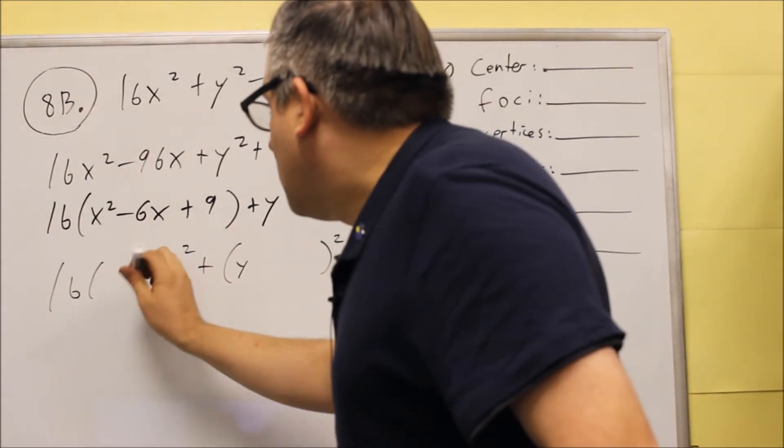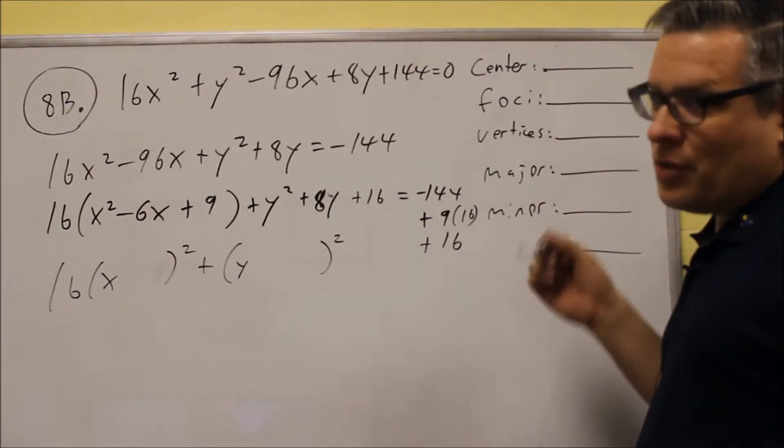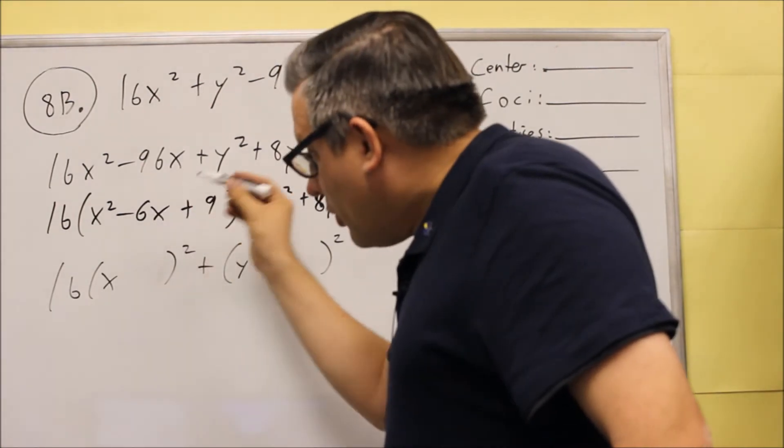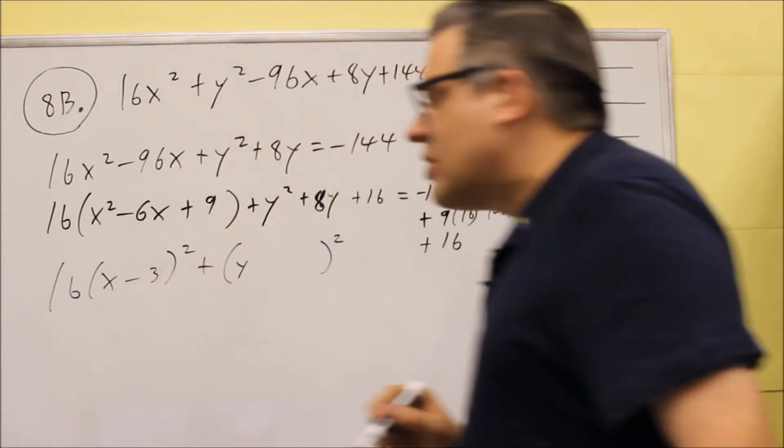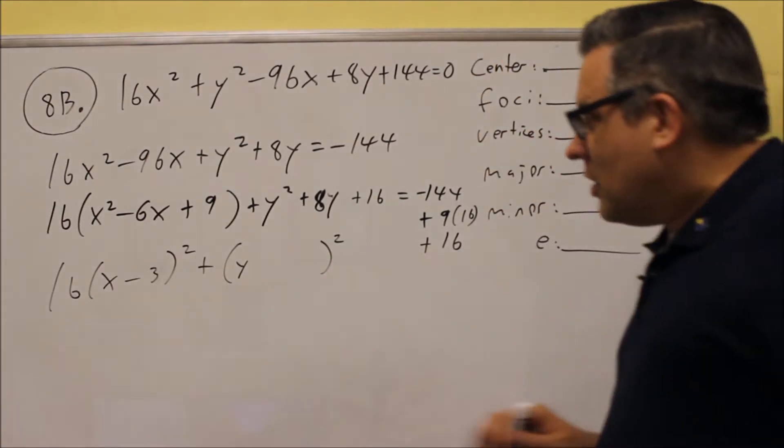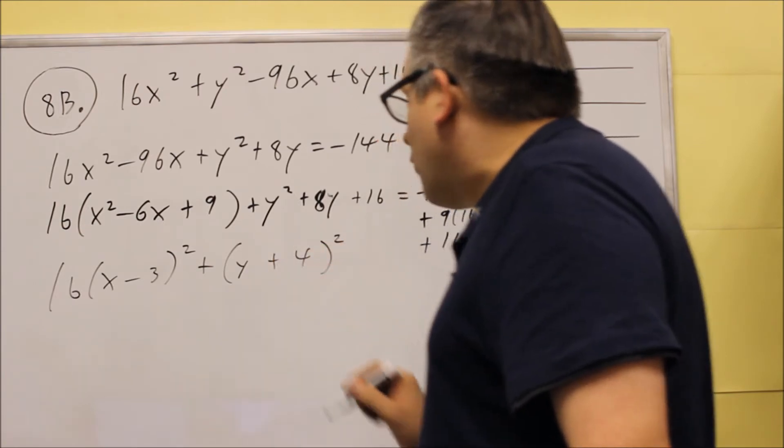So for this one, what goes inside the parentheses will be the first step of the complete the square that we had up there. When we divide this number by 2, we got negative 3. That's what's going to go inside there. 16 is still out front. For this one, we divide that by 2, we got plus 4.